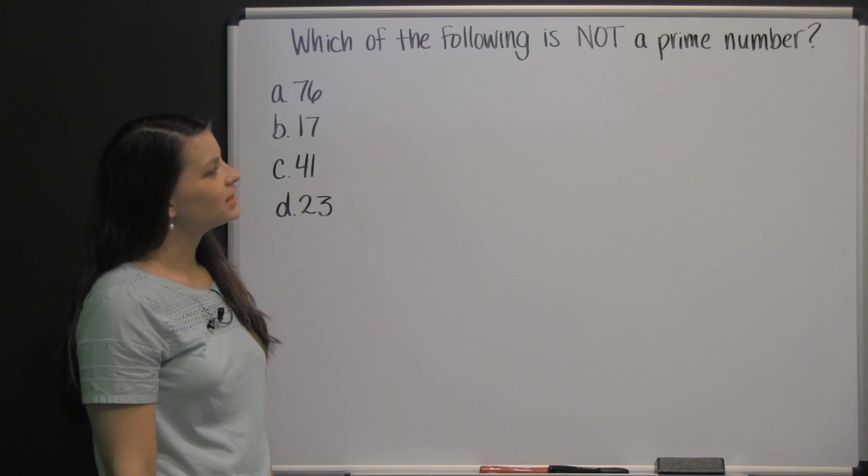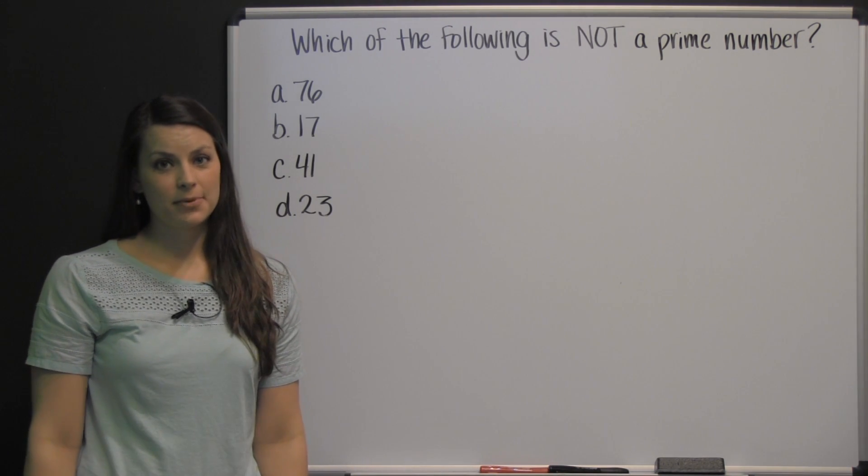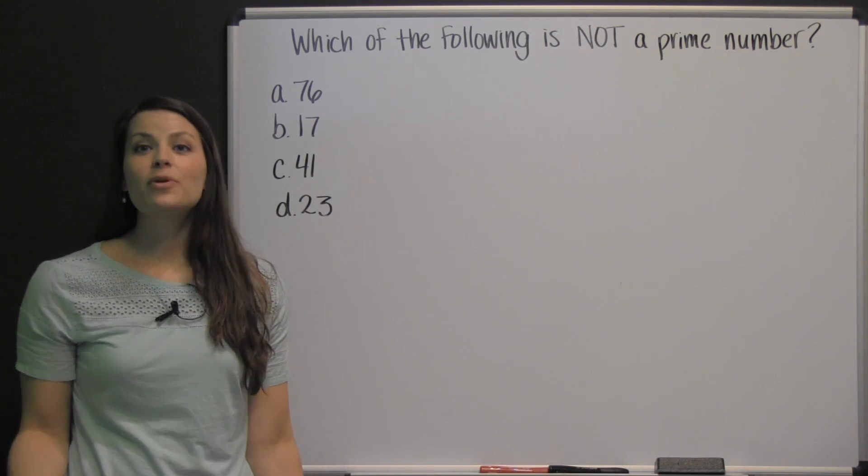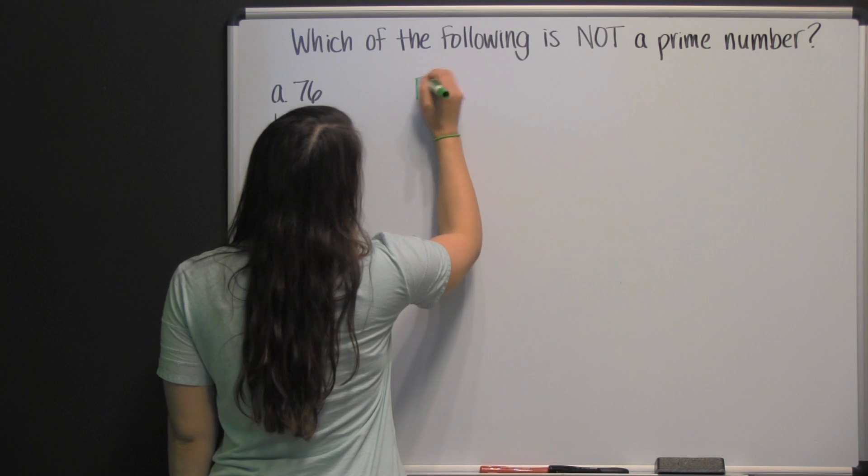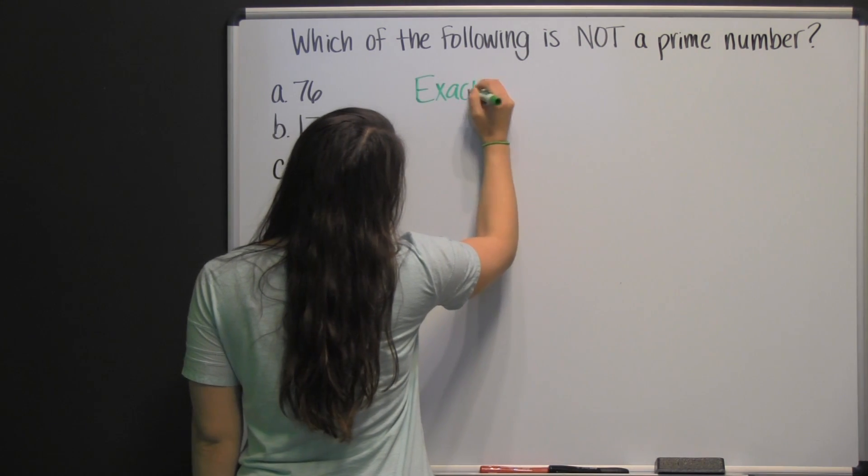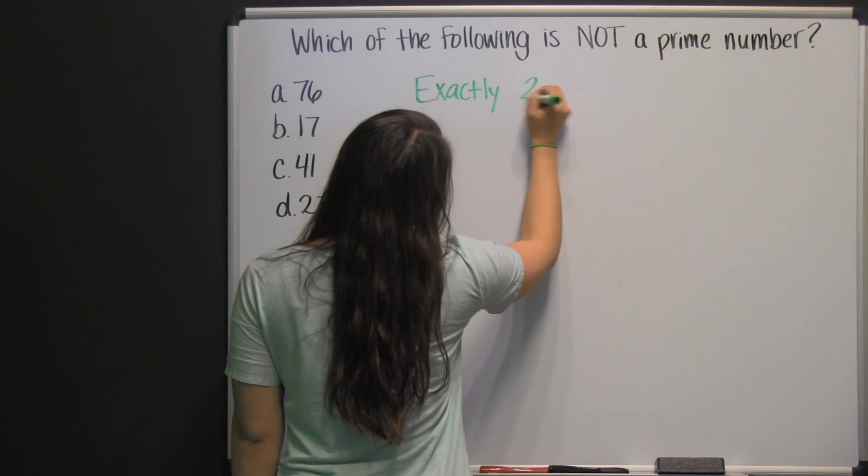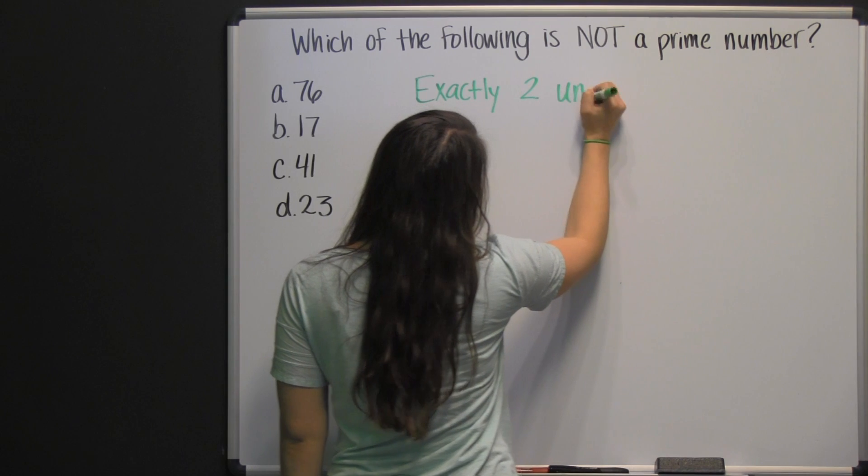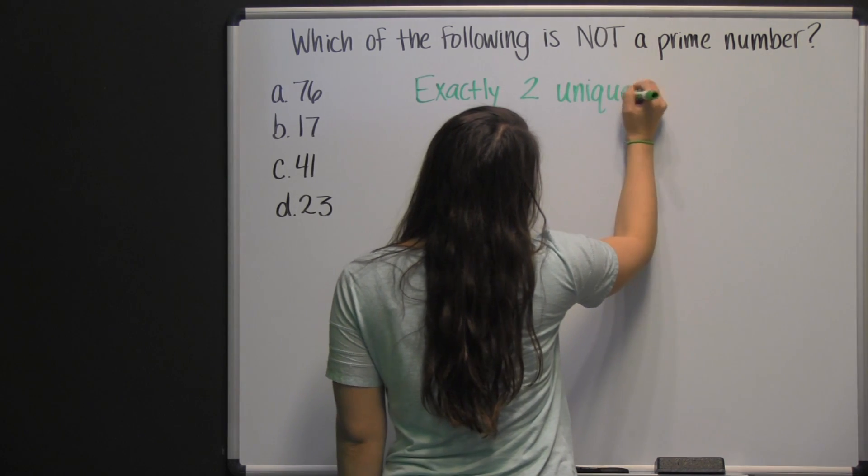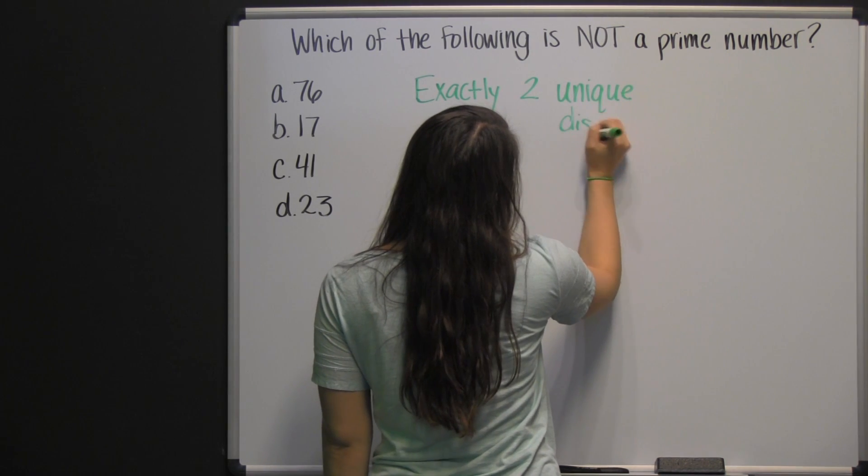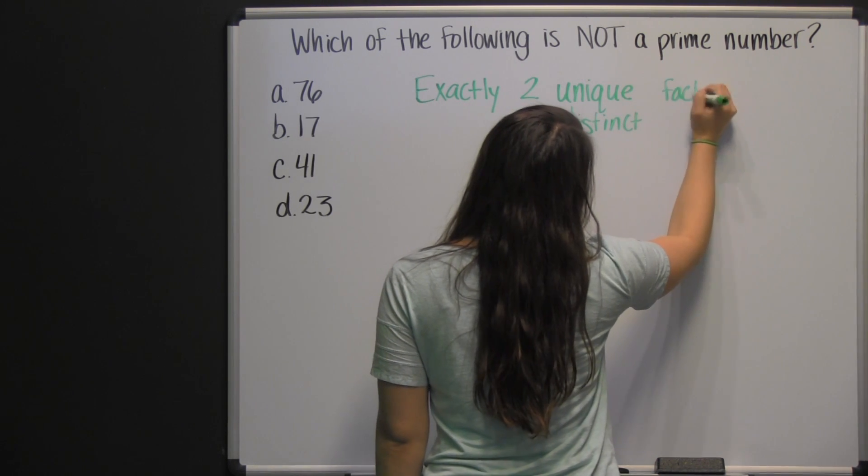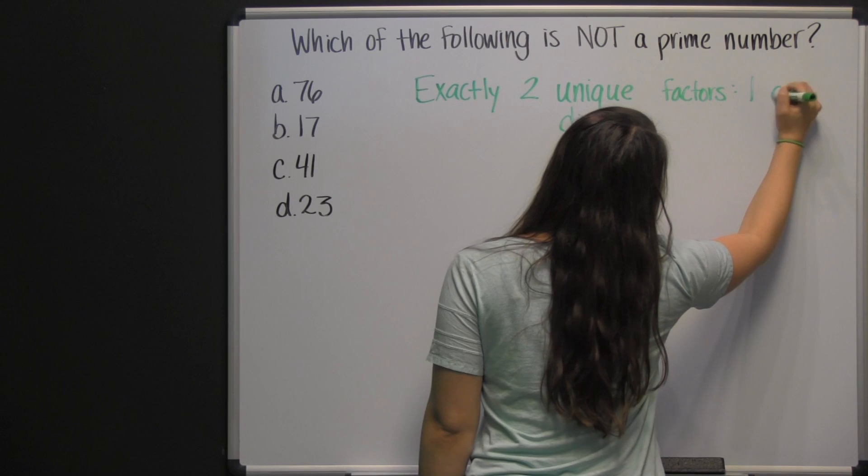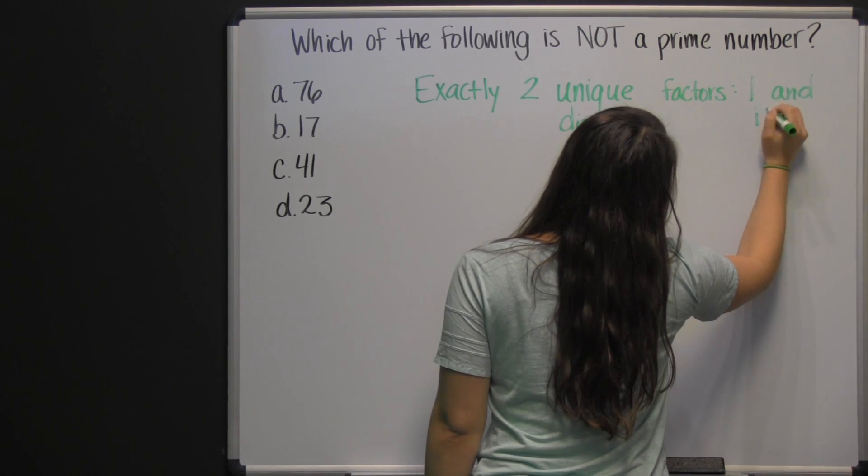Which of the following is not a prime number? So we need to know what a prime number is. A prime number has exactly two unique or distinct factors: one and itself.